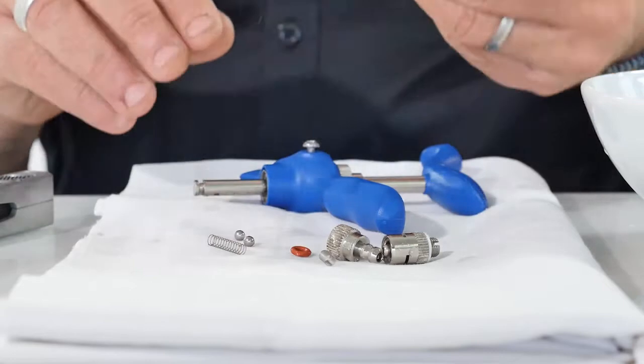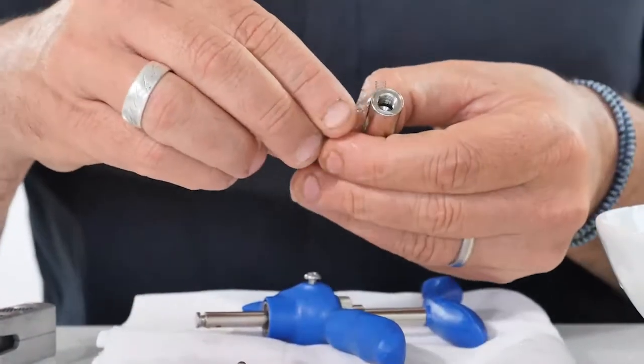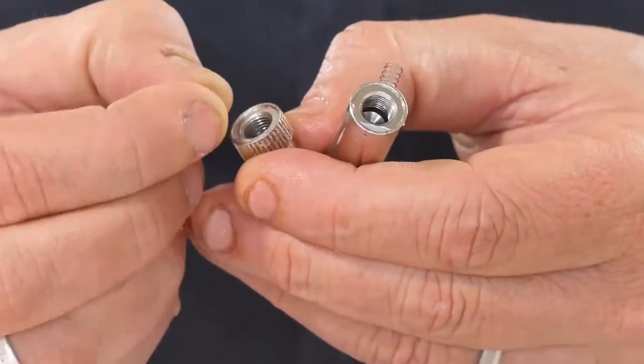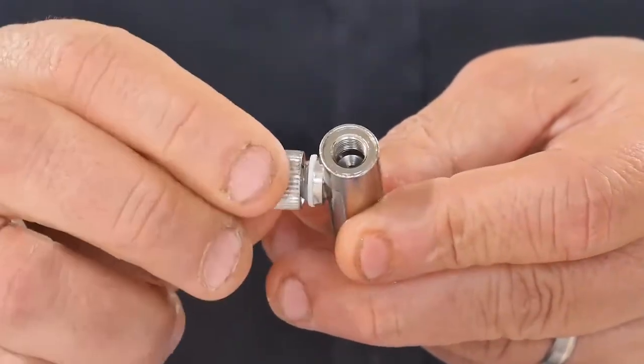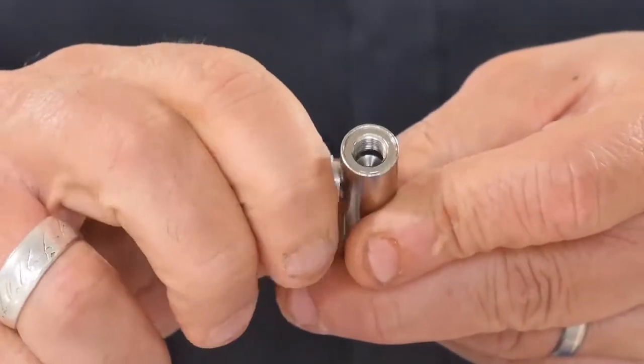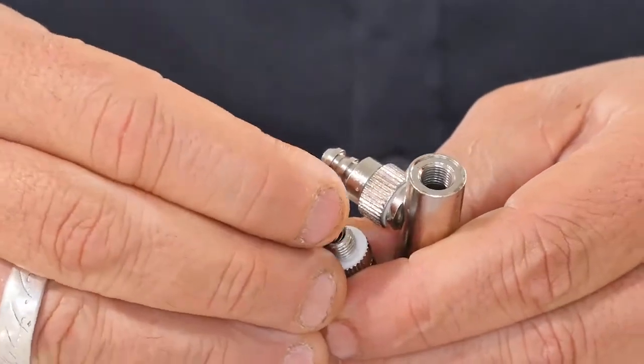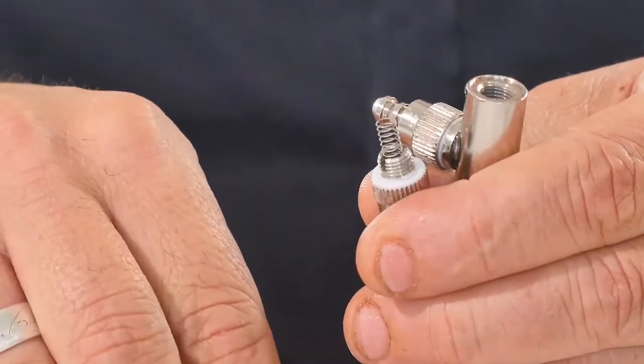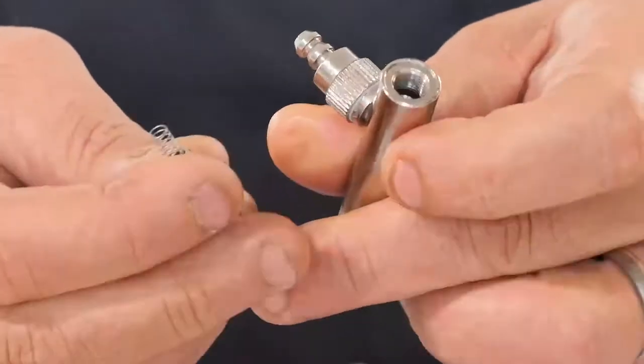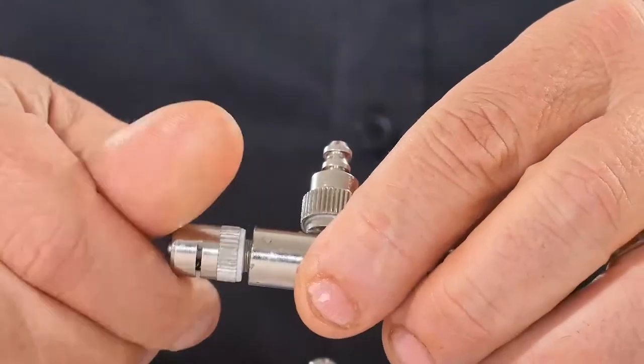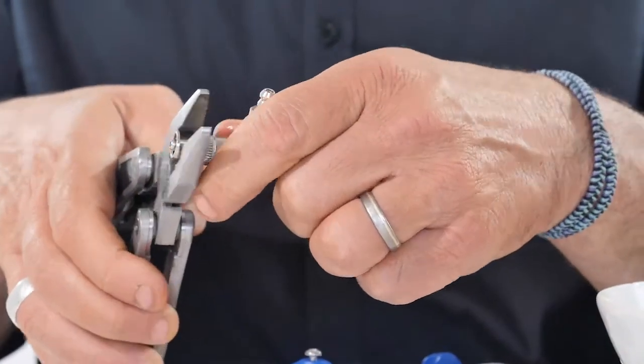Assemble the parts back: place the spring and ball and make sure the washer is in place. Use pliers to slightly close the luer lock and tubing valve housing.